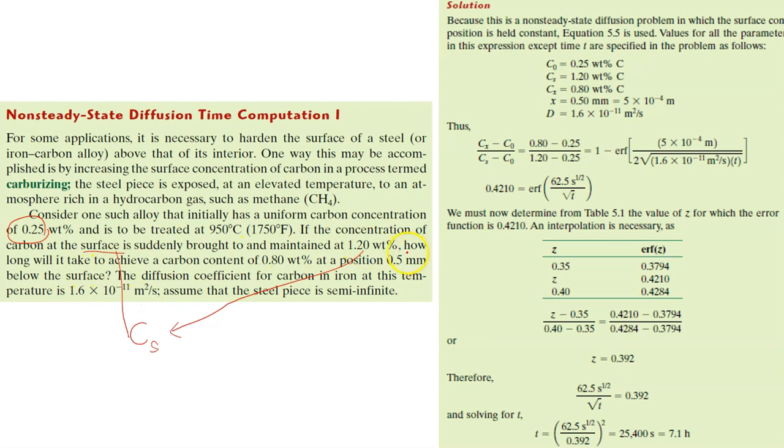If the concentration of carbon at the surface, so automatically you know this is CS, is suddenly brought to and maintained at 1.2 weight percent, how long will it take? So the question is, how long will it take? So meaning they are asking you to calculate what is T to achieve carbon content of, carbon content, what is, this is a C again, concentration, at a position of, but the problem is, is it C0 or CX? It's definitely CX because it says here at a position of 0.5 millimeter.